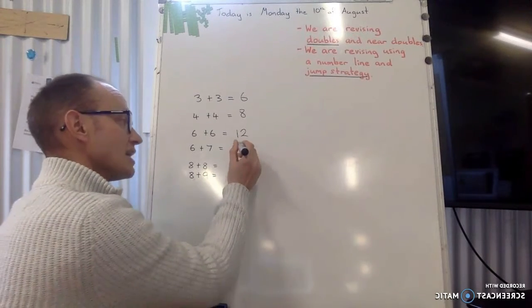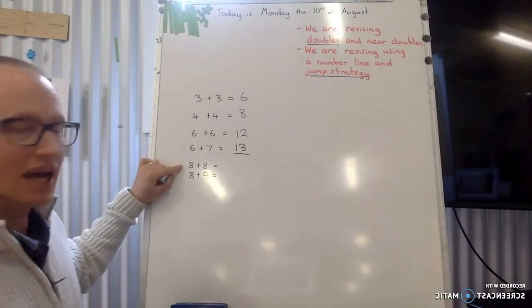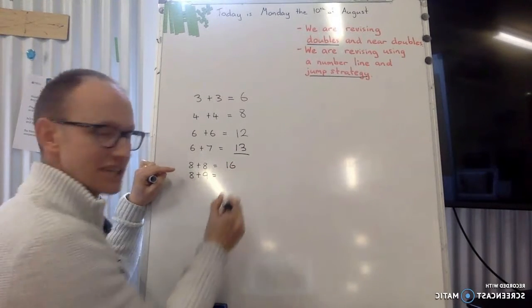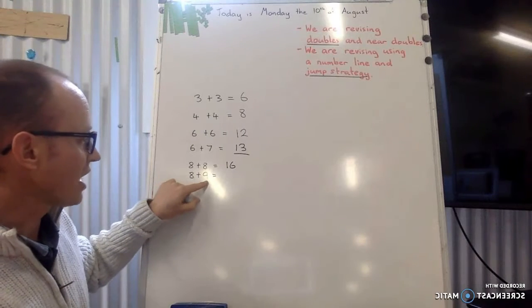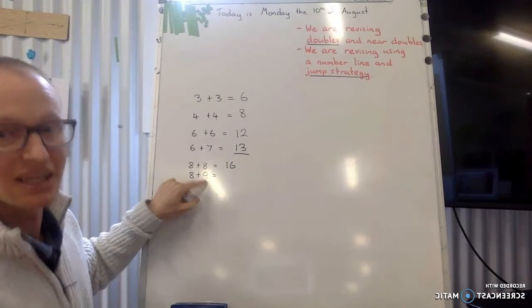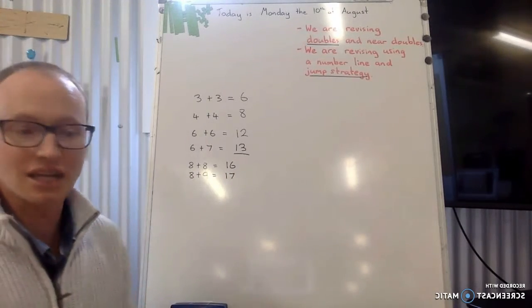Looking at near doubles. This one here, 8 plus 8 is 16 and that is a double. And the near double, 8 plus 9, that's it. 9 is 1 bigger than the 8, so it's 8 plus 8 plus that little bit, 1 different, is 17. So doubles and near doubles.